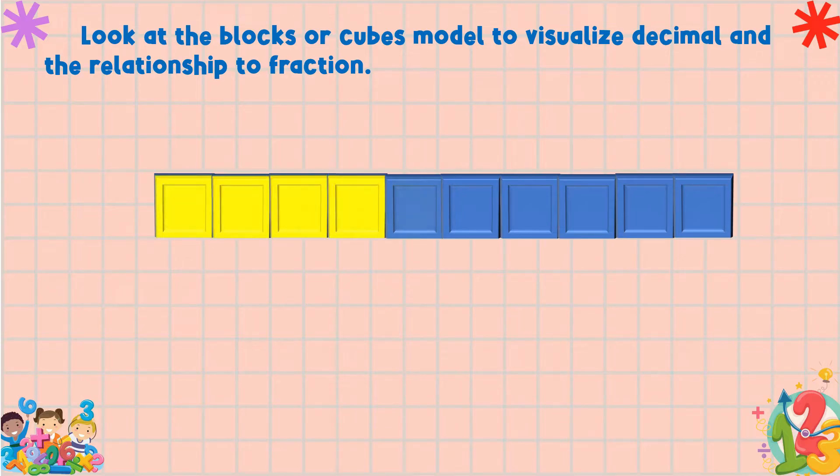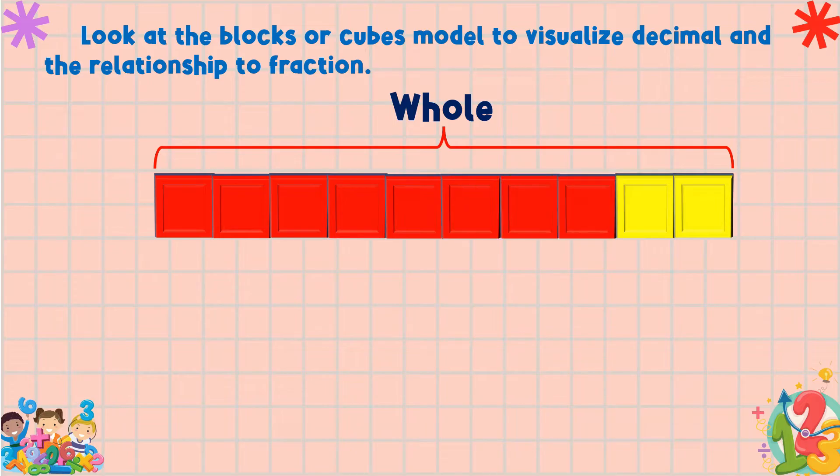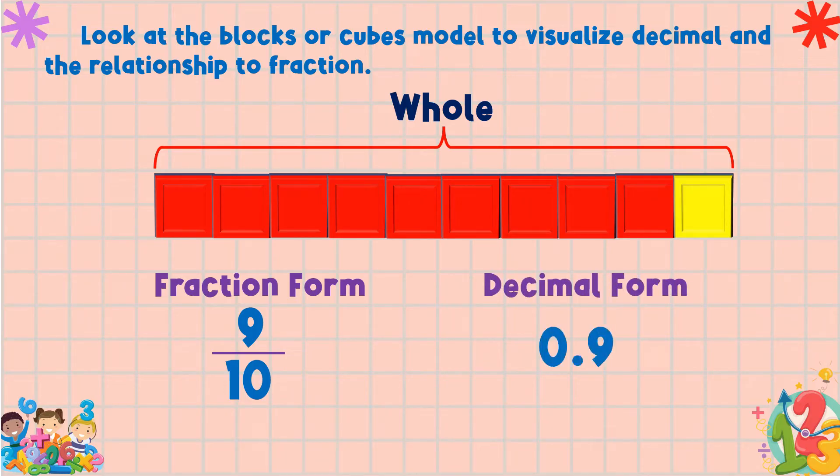Observe that there are 10 cubes representing the whole. Now let's color nine cubes with red. What is the fractional part of the red cubes? It is nine-tenths, or nine out of ten. How do we write nine-tenths in decimal? This is the way we write nine-tenths in decimal: 0.9.